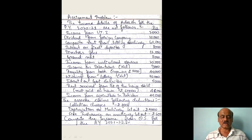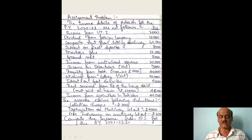For machinery let out, depreciation and insurance are allowable deductions under Section 57. Royalty expenses are also allowable. Allowable deductions include: Rs. 300, Rs. 4,000, Rs. 600, and Rs. 5,000 as per Section 57 allowable expenses.